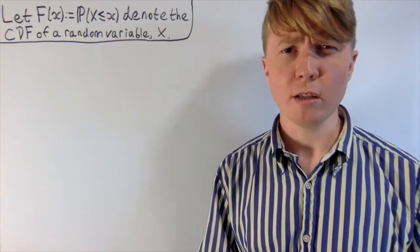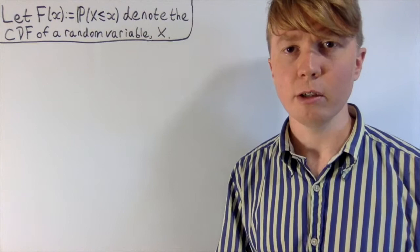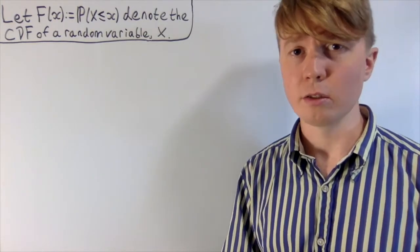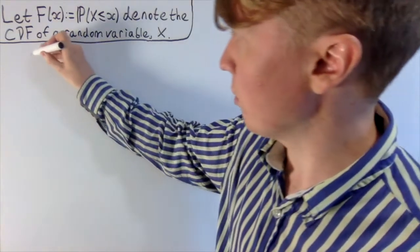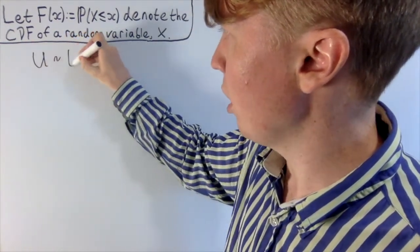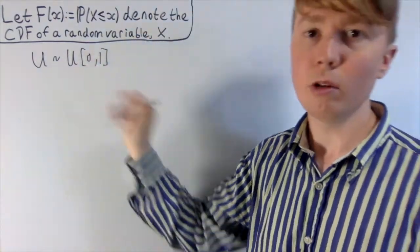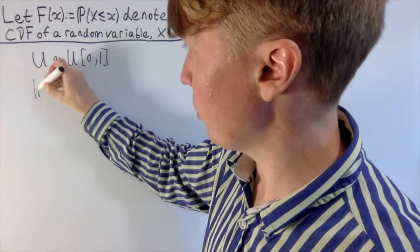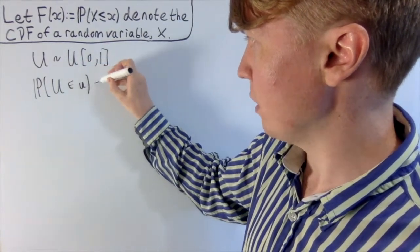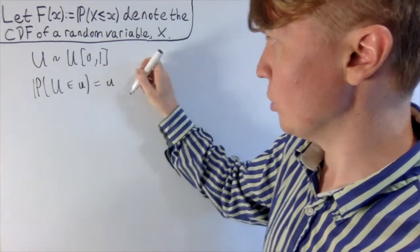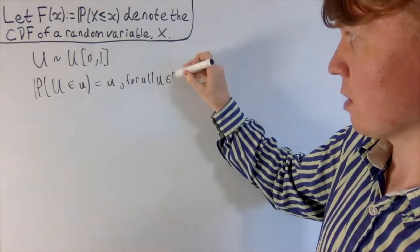We're going to have a look at this really quite surprising result: any real-valued random variable can always be written as just a transformation of a continuous uniform distribution. Here we're talking about the uniform distribution on the closed interval between 0 and 1. We say that U has this distribution if the probability that U is less than or equal to small u is just equal to small u, for all u between 0 and 1.